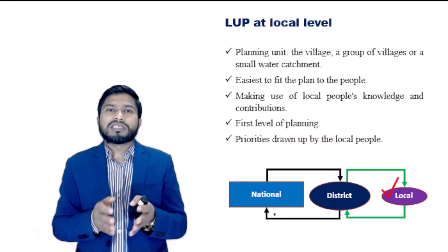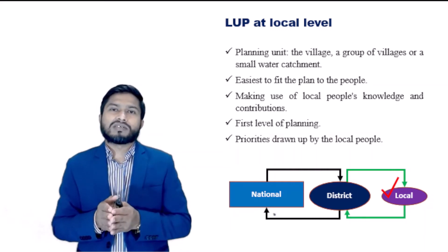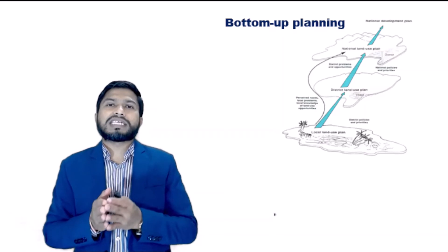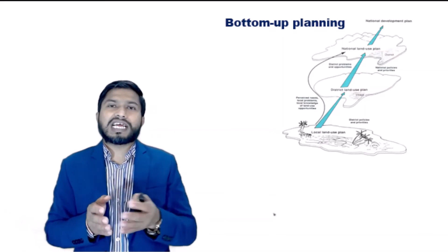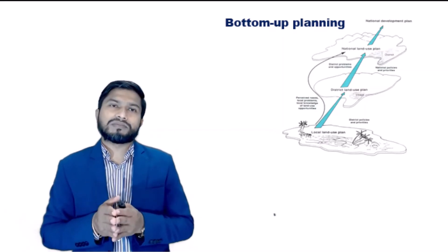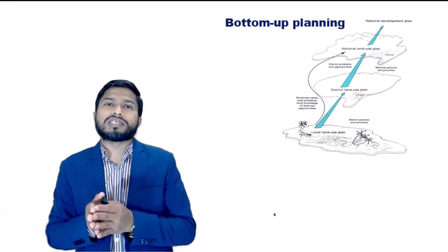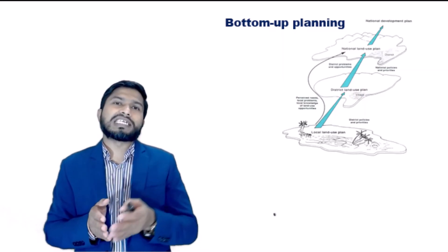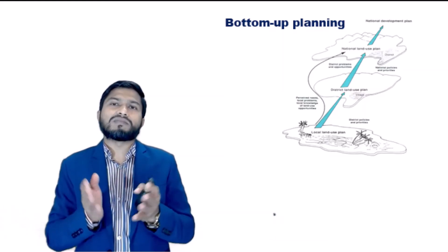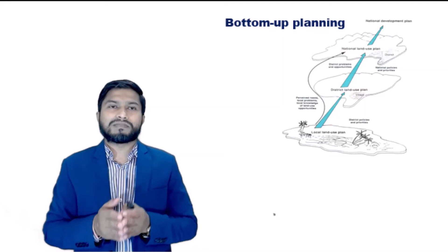Alternatively, this may be the first level of planning, where we consider it as bottom-up planning. Bottom-up planning is initiated at local level and involves active participation by the local community. The experience and local knowledge of the land users and local technical staff are mobilized to identify development priorities and to draw up and implement plans.